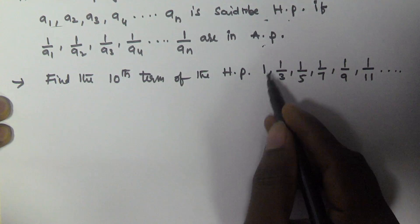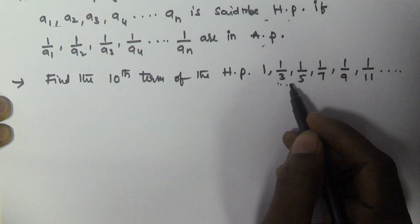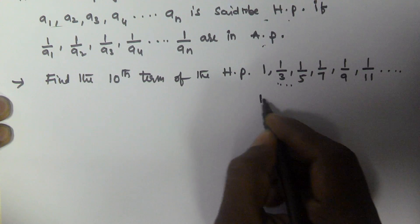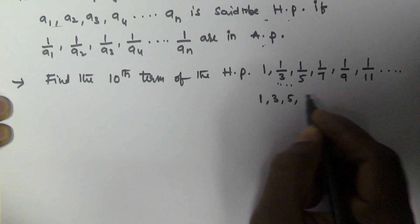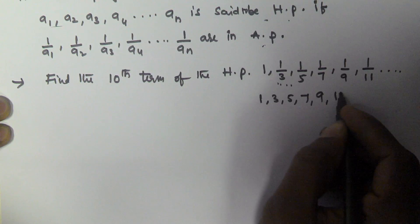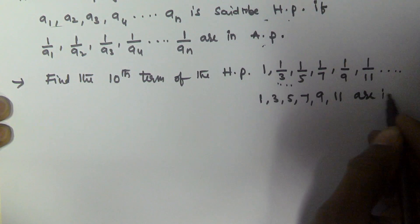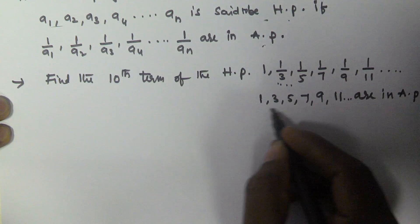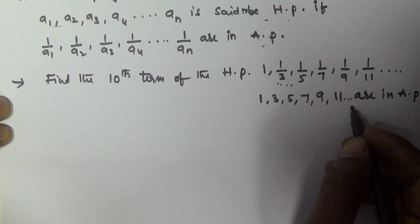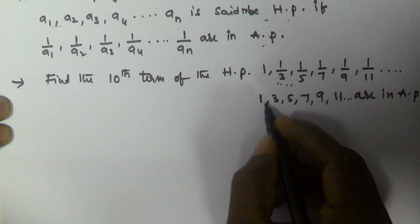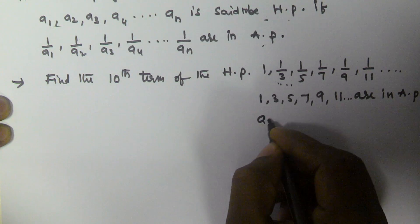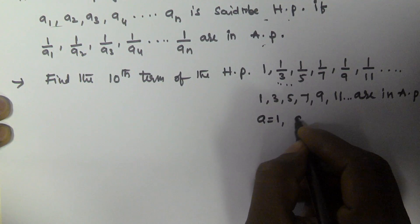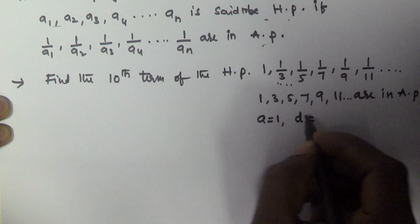Since the given numbers are in harmonic progression, the reciprocals of these numbers are in arithmetic progression. So the reciprocals of these terms are 1, 3, 5, 7, 9, 11, and so on, which are in arithmetic progression. Here the first term a1 is 1 and the common difference d is 3 minus 1, that is 2.